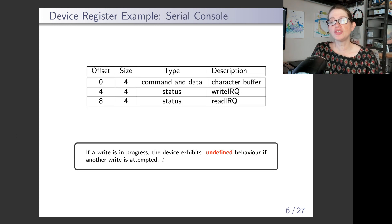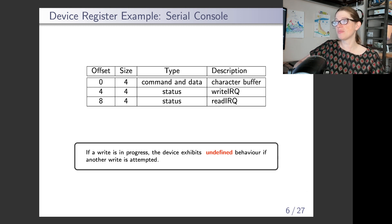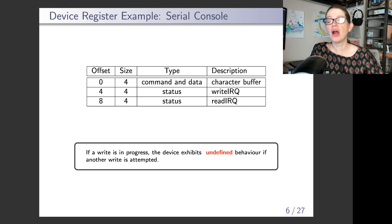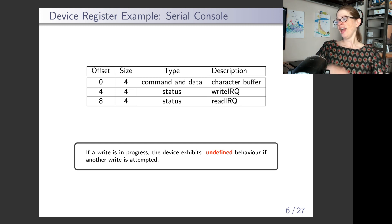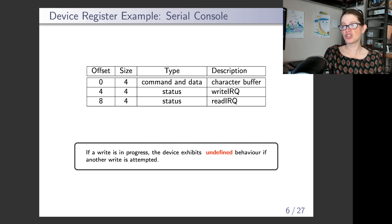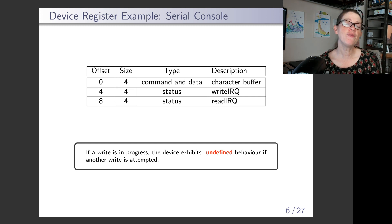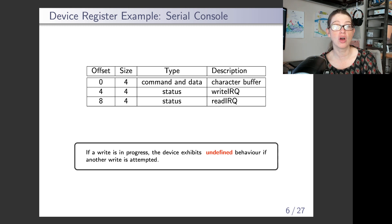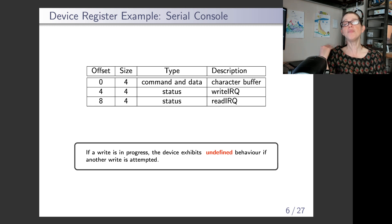Let's look at some other devices. What if I want to read and write characters from the serial console? This device is much more simple — there are actually only three registers, but there's some interesting behavior. We have a command and data register known as the character buffer. If we want to write data to the character buffer, we're putting data out onto the serial console. If we want input from the serial console, we read from the character buffer.